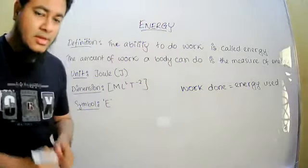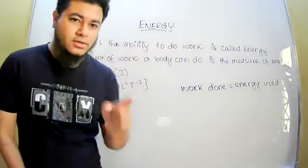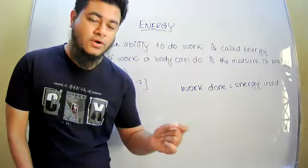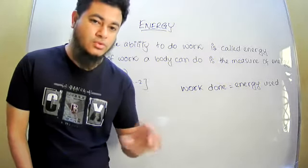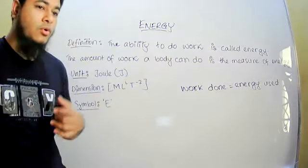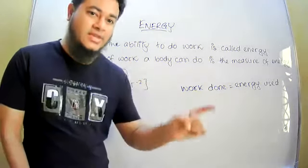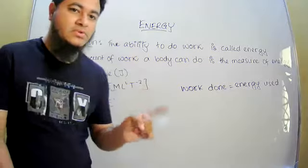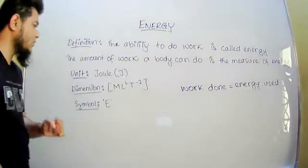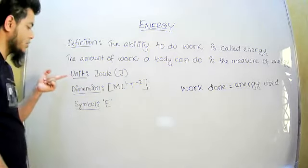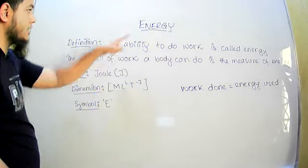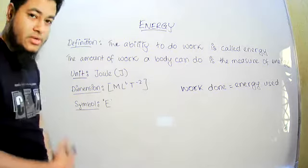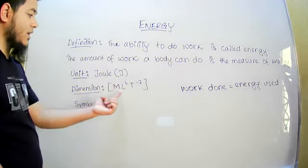If a body can do 20 joules of work, you can say that the energy of that body is 20 joules. If a body can do 30 joules of work, its energy is 30 joules. So the amount of work a body can do is the amount of energy it has. Work done is always equal to energy, so the unit of energy is joules — the same as the unit of work. The dimension is M L² T⁻².